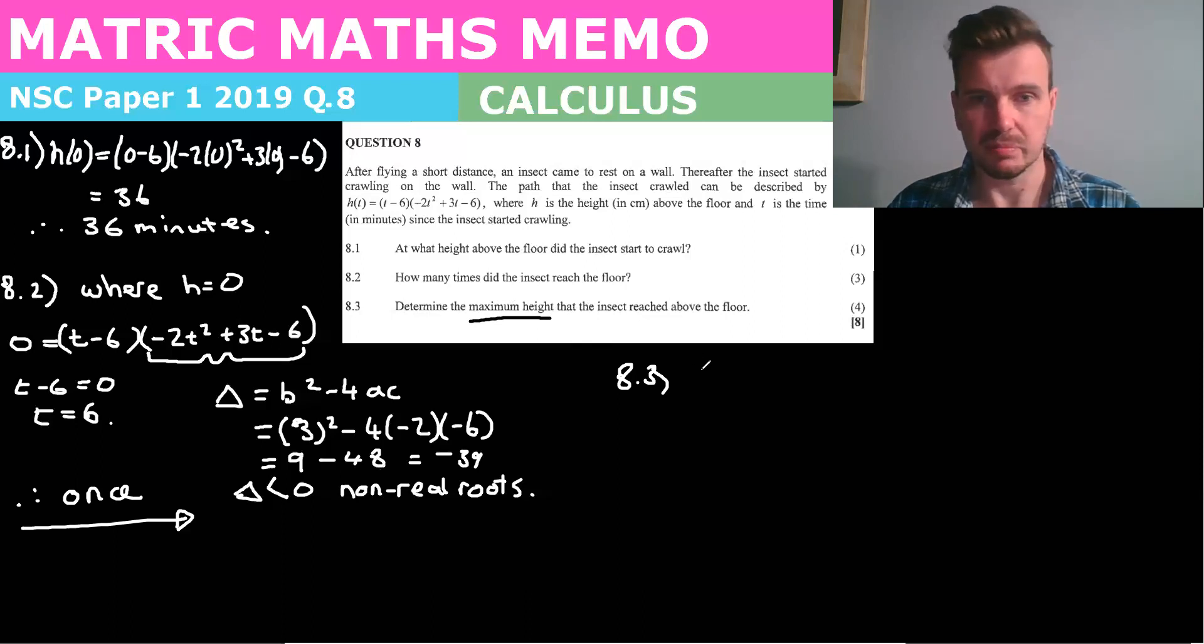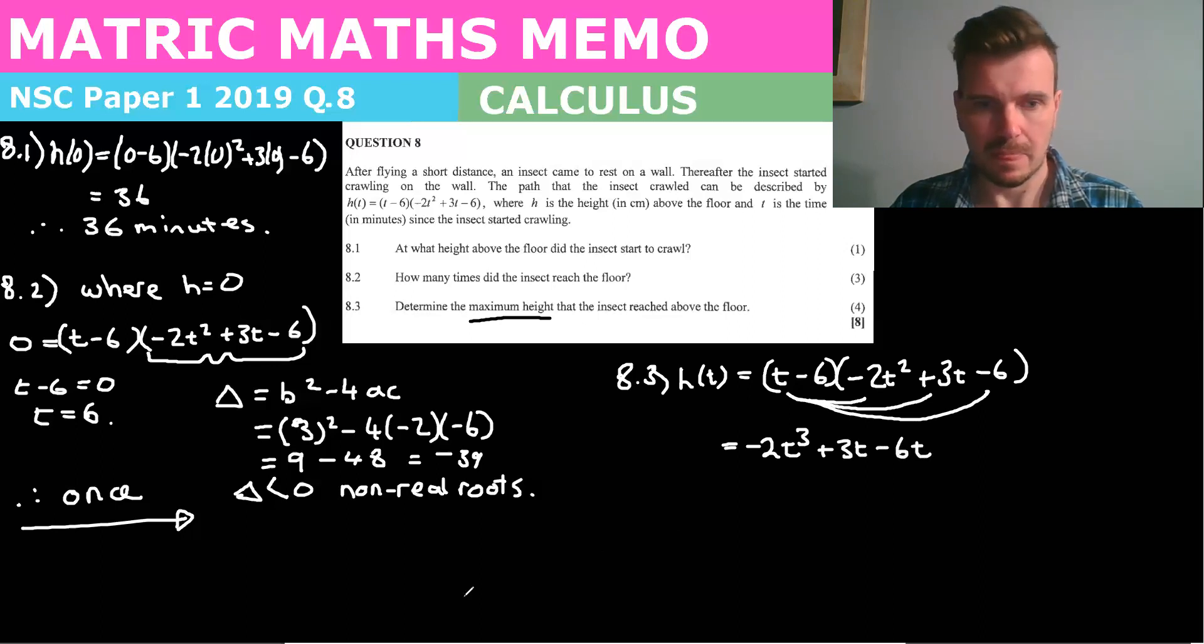So to get this derivative, first of all, I'm going to have to make it a little bit simpler to derive. So I'm going to say H of T equals, and I'm going to have to times everything out. This is going to take a little bit of time, but it's four marks. So, and it's hopefully fairly easy marks as long as you don't make any mistakes. Okay. So T times minus two t squared is negative two t cubed. T times three T is three t squared, negative six T.